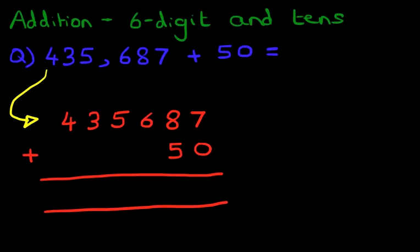We start with the column on the right-hand side first. What is 7 plus 0? That's nice and easy. It is 7.